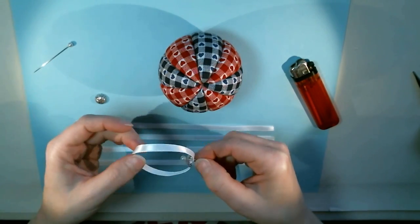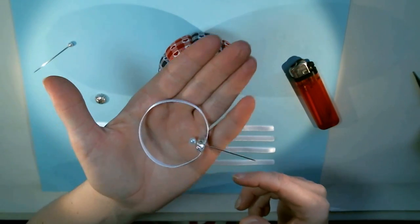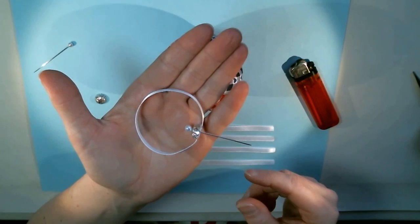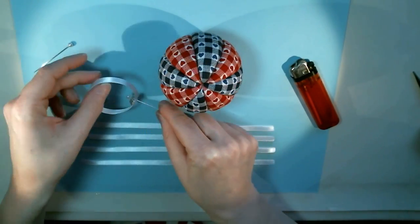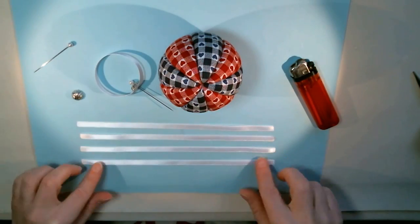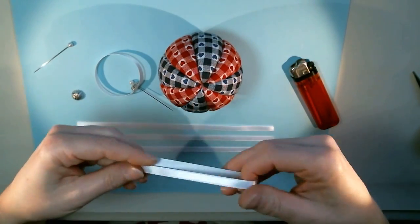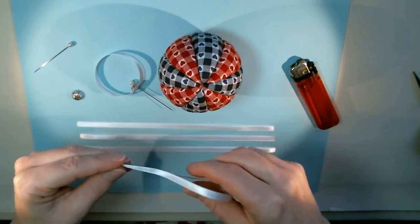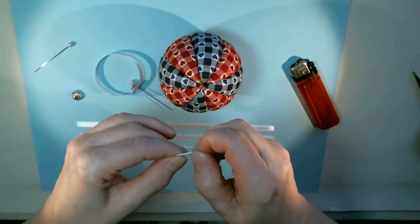And make a loop like that. Now as you can see, the shiny side of my ribbon is facing outwards and the dull side of my ribbon is facing inwards. Okay, that's important if you're using a ribbon that has two sides. So make sure that it's facing the right way.